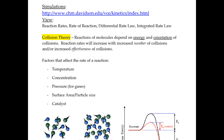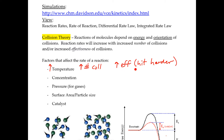If you increase the temperature you will increase the rate of a reaction because you will increase the number of collisions and you will also increase the effectiveness of collisions because they're going to hit harder. When you increase the number of collisions that's because they're going to hit more often because they're moving faster. Temperature affects the speed of the molecules, so if they move faster they're going to hit more often and hit harder, so more of them have the activation energy needed to get the reaction to occur.